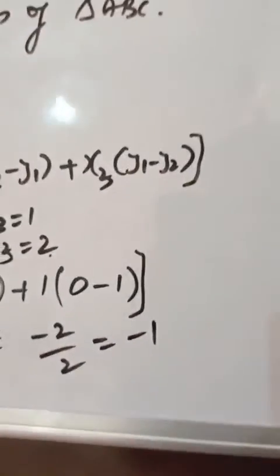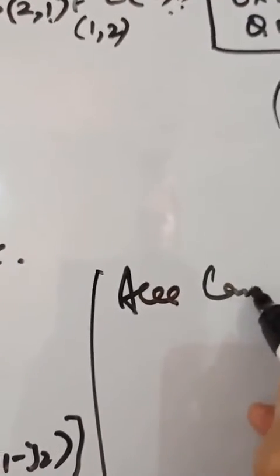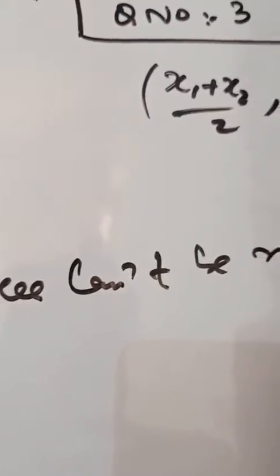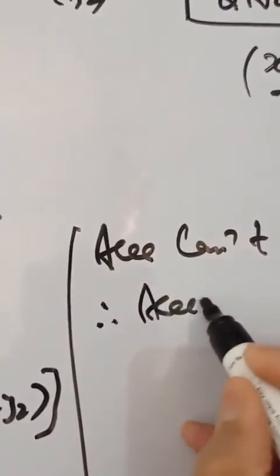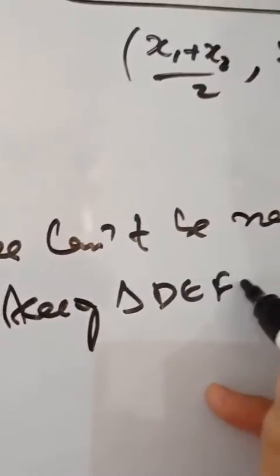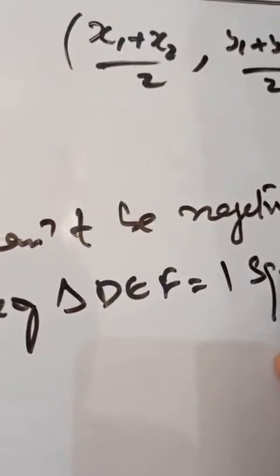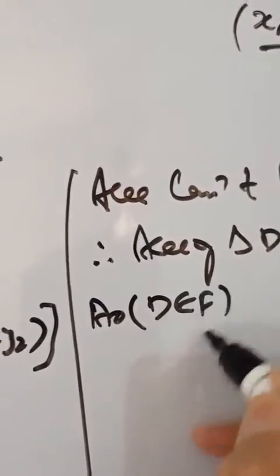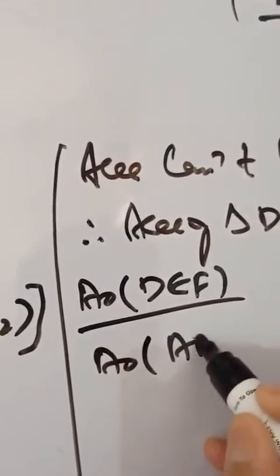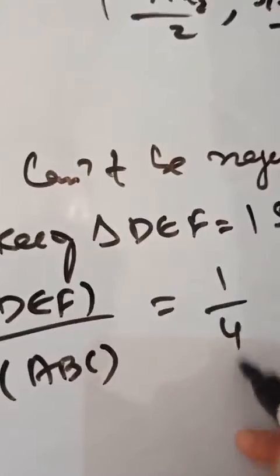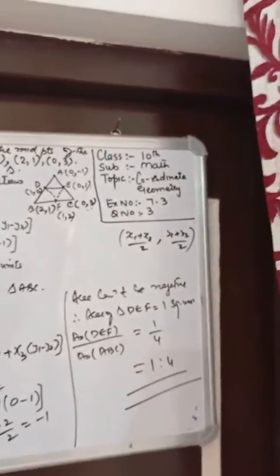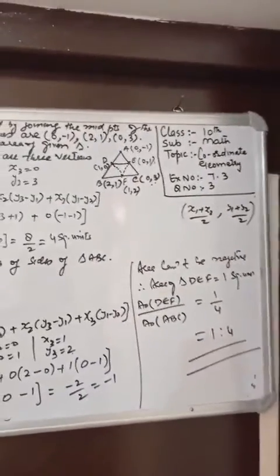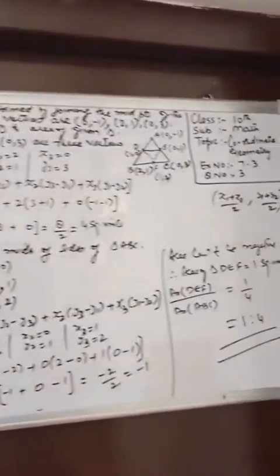Area can't be negative, therefore area of triangle DEF is 1 square unit. Now the ratio: area of triangle DEF to area of triangle ABC is 1:4. This is an important question from Exercise 7.3, question number 3.